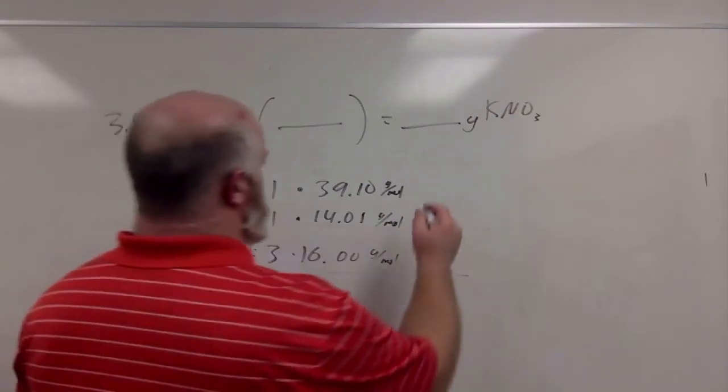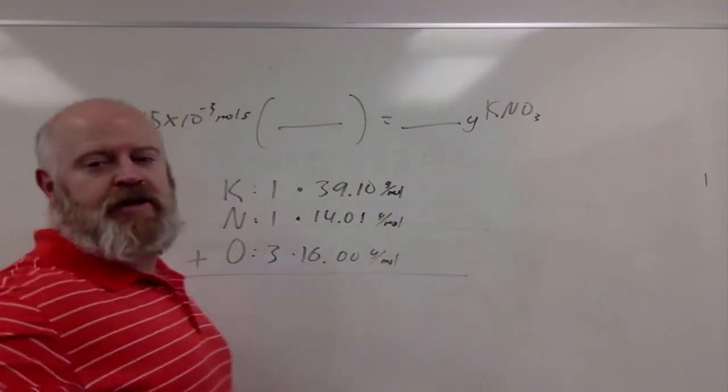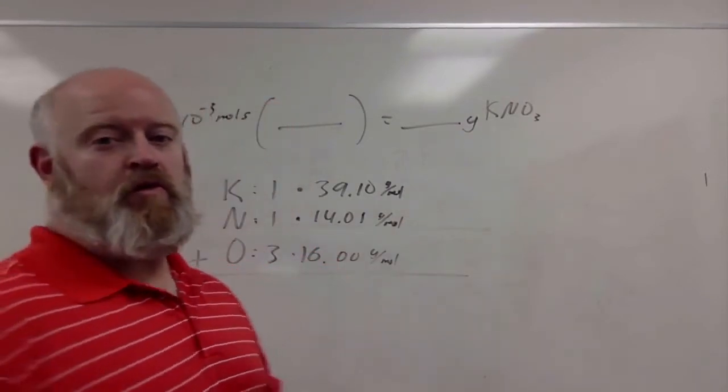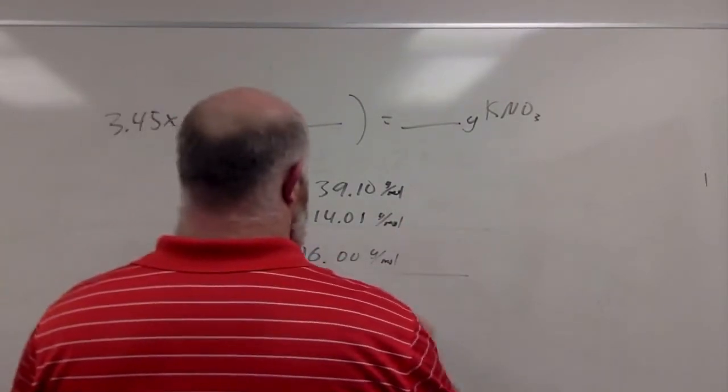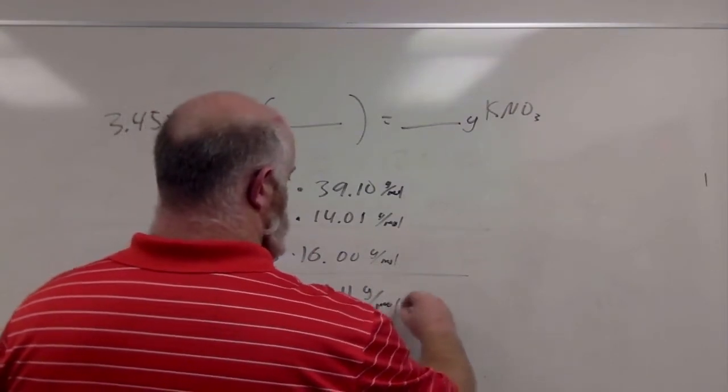We take 39 plus 14.01 plus 16 times 3, and if we add those all up, we get a molar mass of 101.11 grams per mole.